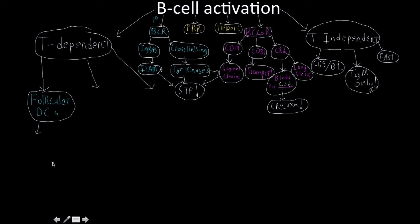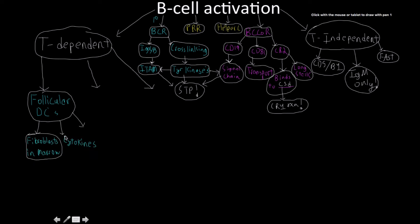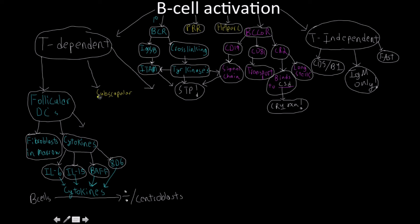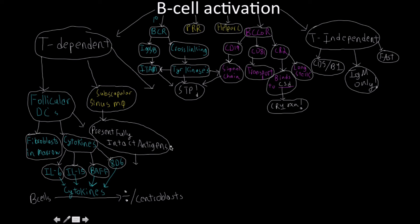Follicular dendritic cells derive from fibroblasts in the bone marrow. They secrete specific cytokines — interleukin-6, -15, BAFF, and APRIL — that collectively play a role in B-cells dividing and differentiating into centroblasts. Both subscapular sinus macrophages and follicular dendritic cells present fully intact antigens to B-cells. They are not phagocytic, but have complement receptor 1 and complement receptor 2 with that long flexible stalk to do antigen fishing.